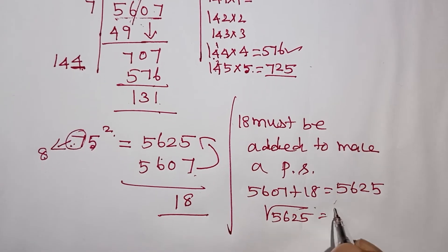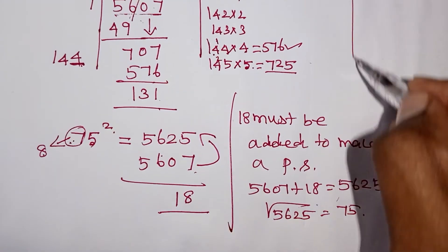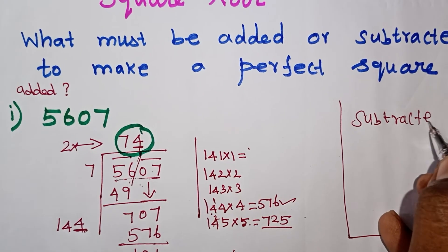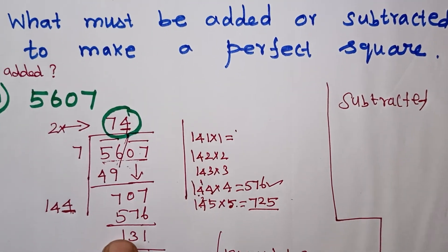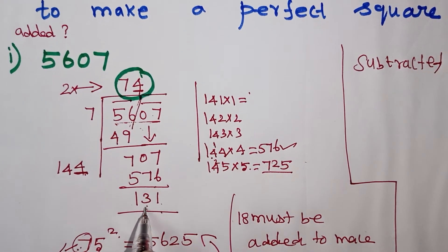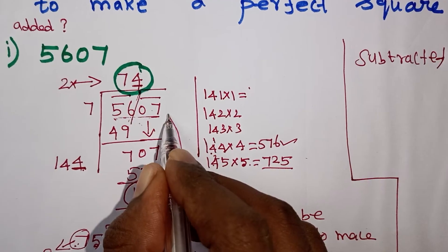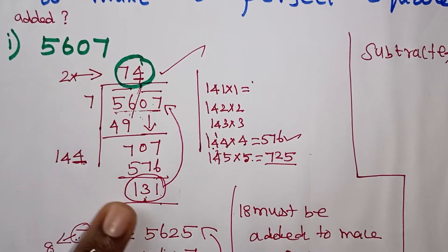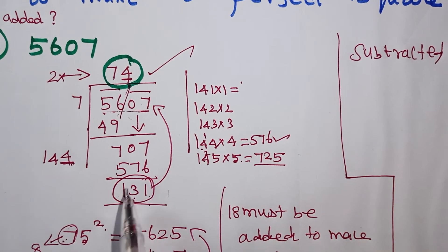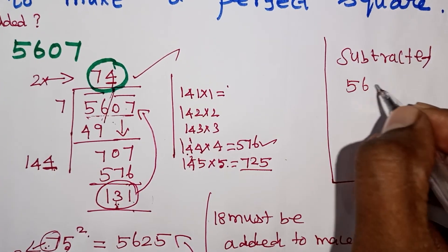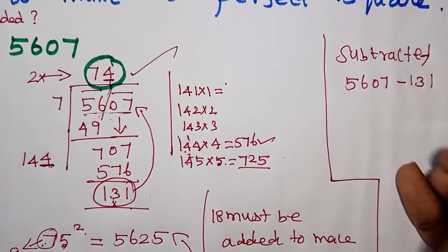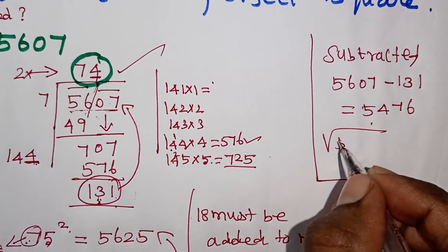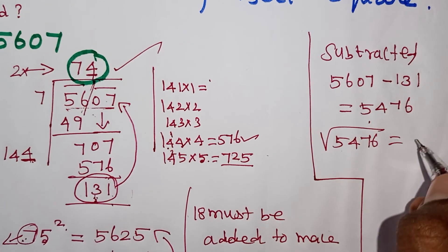What must be subtracted? This procedure is complete. The remainder is 131. The remainder is 131, so we subtract it. The answer for 74 squared — remainder becomes 0. So the number subtracted is 131. In 5607, subtract 131: 5607 minus 131 equals 5476, which is a perfect square. The square root is 74.